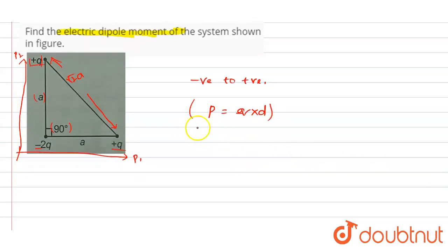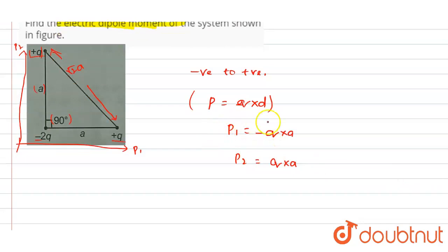P1 will be equals to -q × a. We will write p2 value also: P2 = q × a. In P1 we get the negative charge and in P2 we get the positive charge because the dipole moment starts from the negative and ends at the positive.